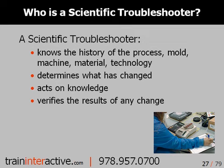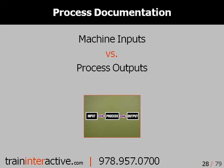Let's talk about how a scientific troubleshooter acts. A scientific troubleshooter will know the history of the process, mold, machine, material, and technology; determine what's changed; will act on knowledge; and will verify the results of any change. A scientific troubleshooter relies on process documentation.